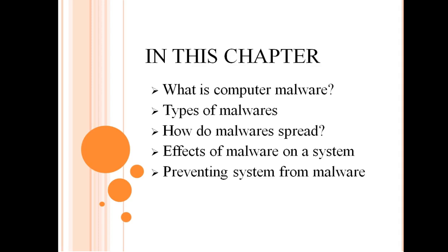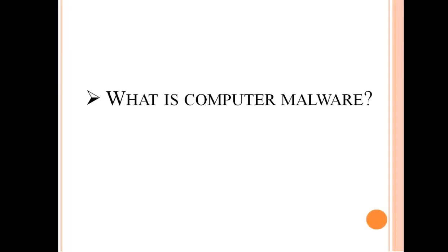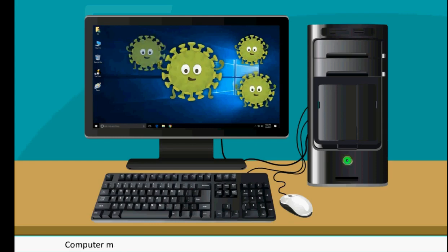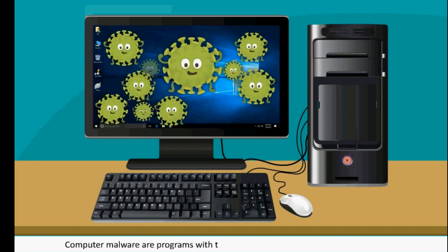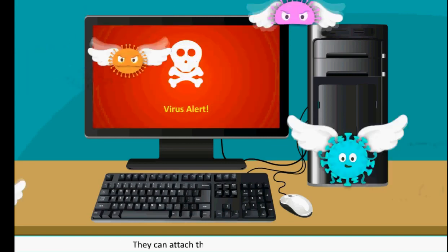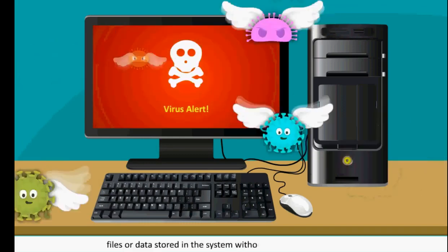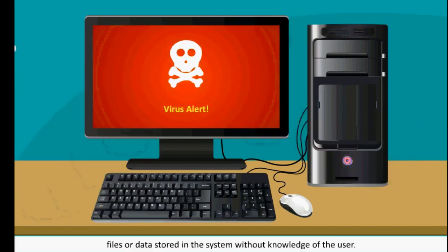Effects of Malware on a System and preventing a system from Malware. Malware stands for Malicious Software. It is a general term used to refer to software which can cause damage to our computer. Computer Malware are programs with the ability to replicate and execute themselves. They can attach themselves to other programs, files, or data stored in the system without knowledge of the user.